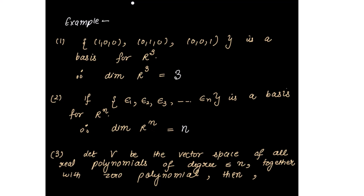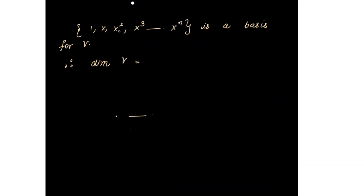Let V be the vector space of all real polynomials of degree less than or equal to n, together with the zero polynomial. Then {1, x, x², x³, ..., xⁿ} is a basis for V. Counting the vectors: the powers go from 0 to n, so the number of vectors is n+1. Therefore, the dimension of V is n+1.